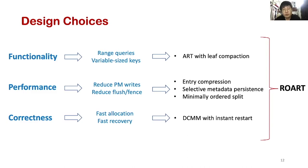After the discussion of three practical aspects, we propose several design choices. For functionality, we choose adaptive radix tree as our basis, which naturally supports variable-sized keys. We propose leaf compaction to optimize range query. For performance, we propose three optimizations. For correctness, we design a new allocator, DCMM, optimized for allocation performance and recovery time.